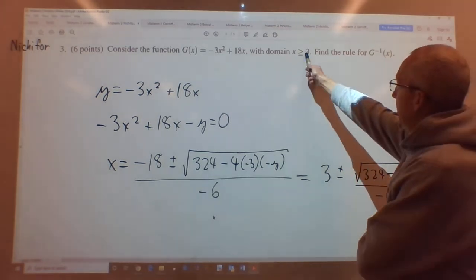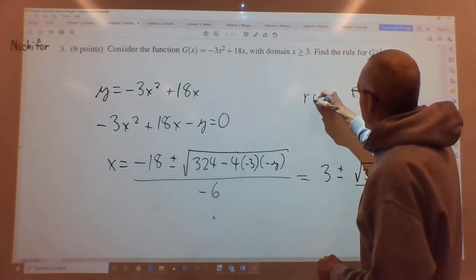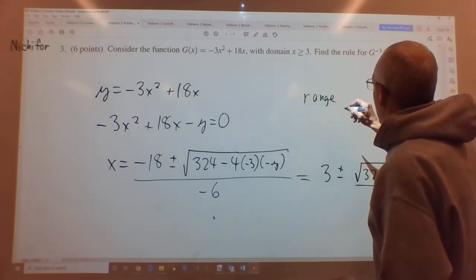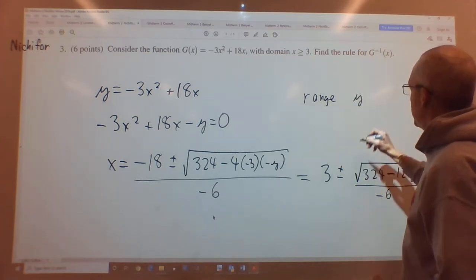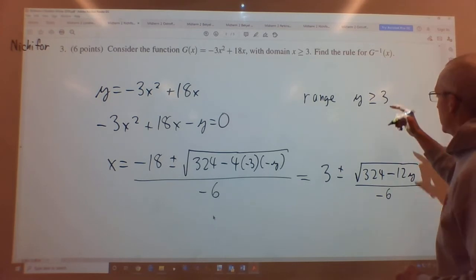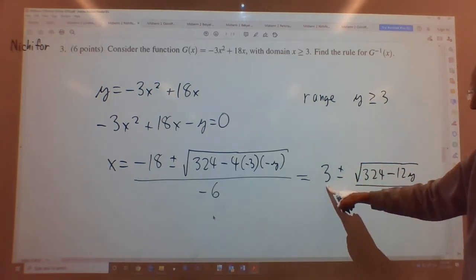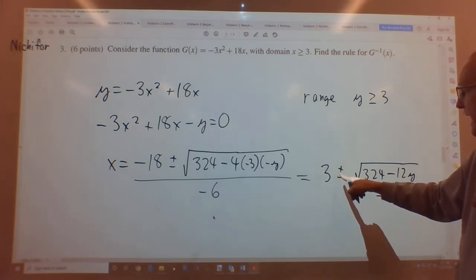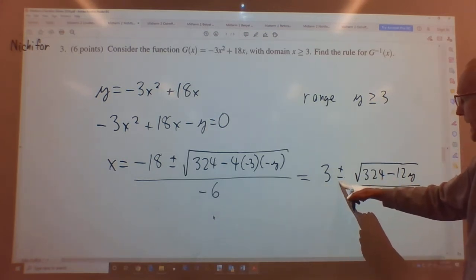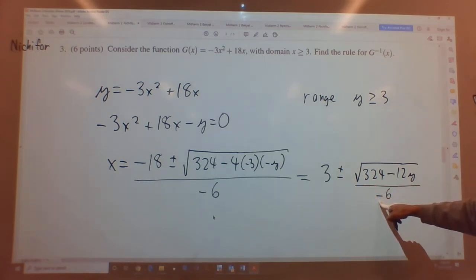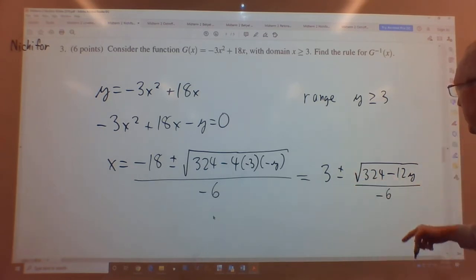They say domain x greater than or equal to 3. That means the range of our inverse function is y, the range of our function is y greater than or equal to 3. So this thing has to be greater than or equal to 3. That means this is a 3, so we have to add a positive number to it. So therefore we choose the minus, since it's minus the negative, right? So minus the negative is a positive.